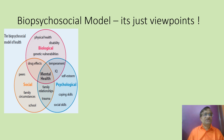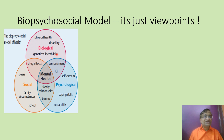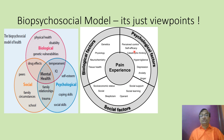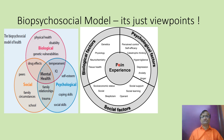Now we move to the biopsychosocial model, which incorporates everything. Mental health, social circumstances, schooling, peers, drug effects, temperament — all are included. Biological, psychological, and social factors together form the biopsychosocial model of pain. Biological factors include genetics, physiology, neurochemistry, and tissue damage. Social factors include socioeconomic status, operant social learning, and social support. Psychological factors include perceived control, catastrophic thinking, hypervigilance, depression, anxiety, and anger.